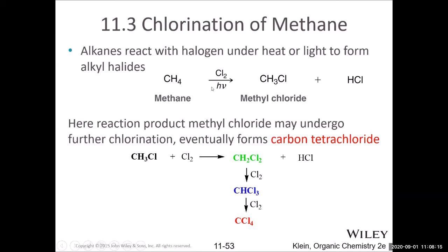Let me wrap up the chapter with some reactions. Alkanes do not have many interesting reactions for chemists because they are saturated and hard to convert to new products. The most common reaction discussed for alkanes is the halogenation reaction — for example, chlorination. In chlorination, an alkane reacts with elemental halogen under high-energy conditions such as heat or UV light to form an alkyl halide.